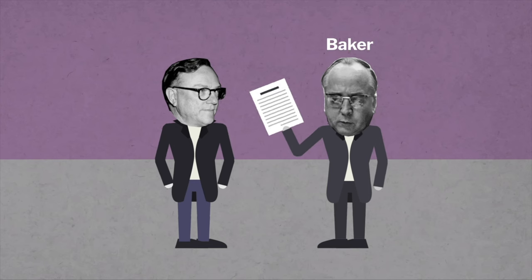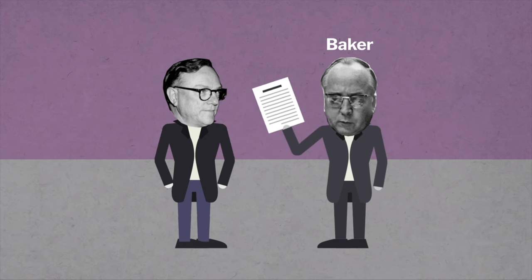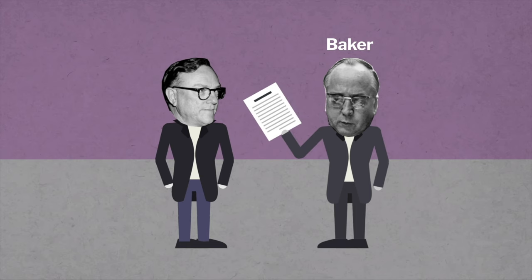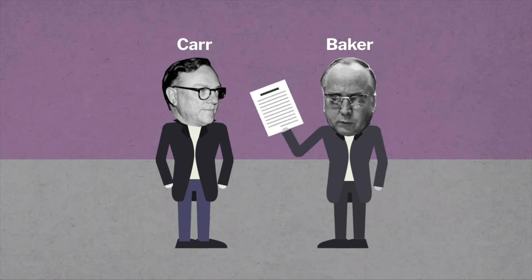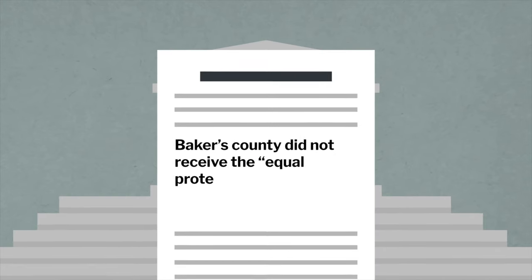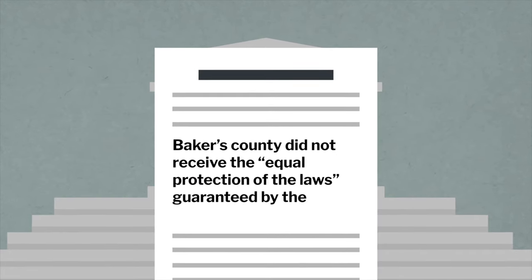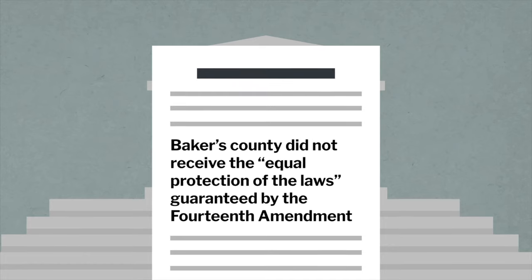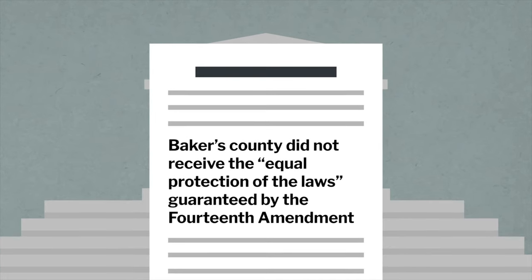On behalf of himself and other residents of his legislative district, Baker filed a lawsuit with the federal district court against the defendant, Tennessee Secretary of State Joe Carr. The lawsuit stated that Baker's county did not receive the equal protection of the laws guaranteed by the 14th Amendment, by virtue of the debasement or diluting of their votes.